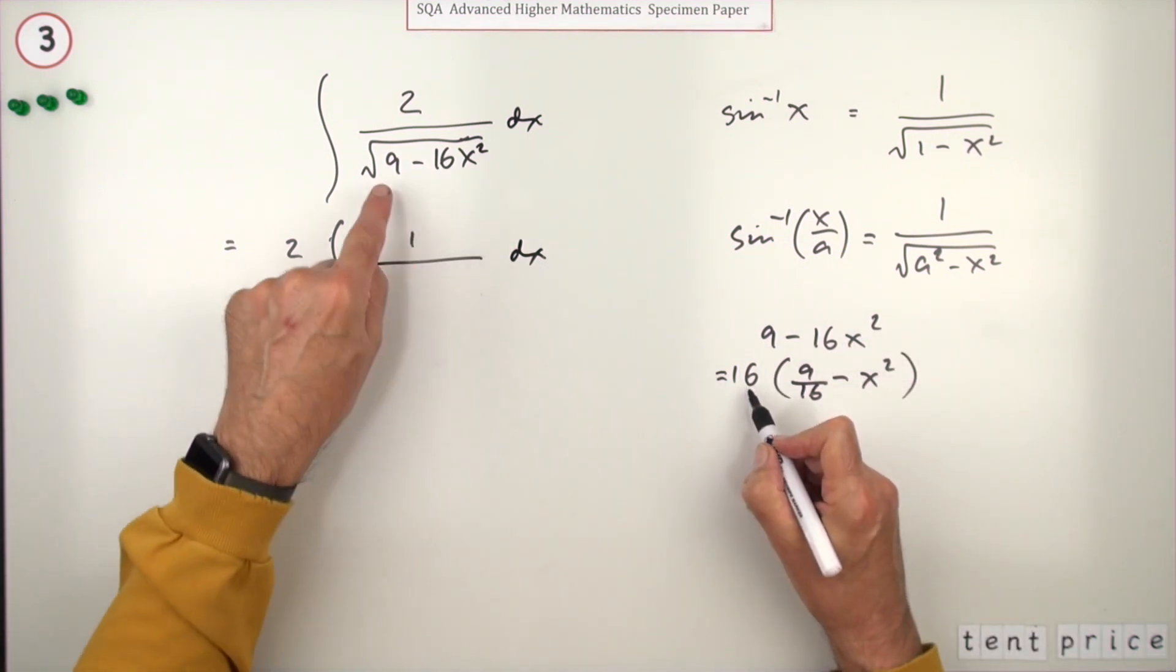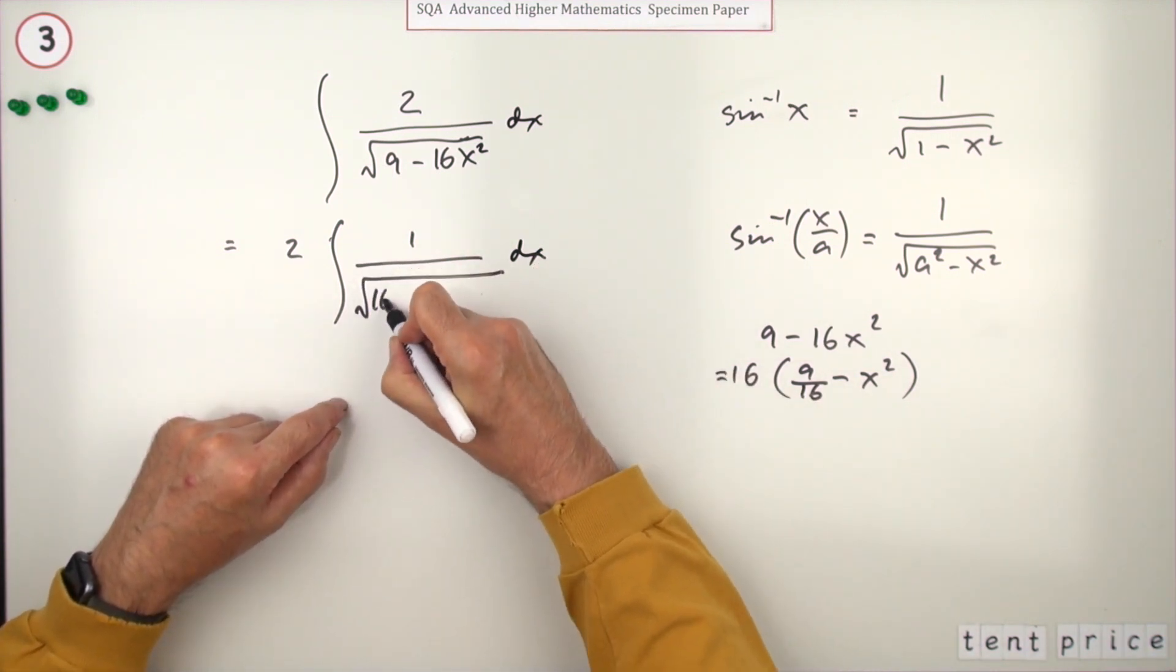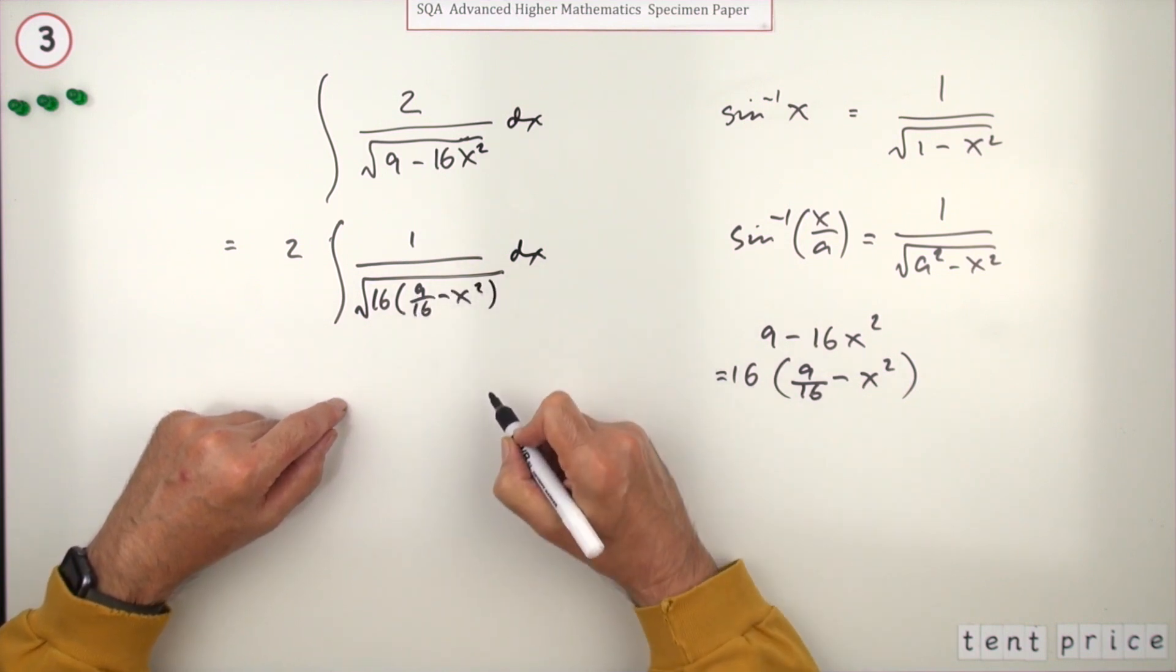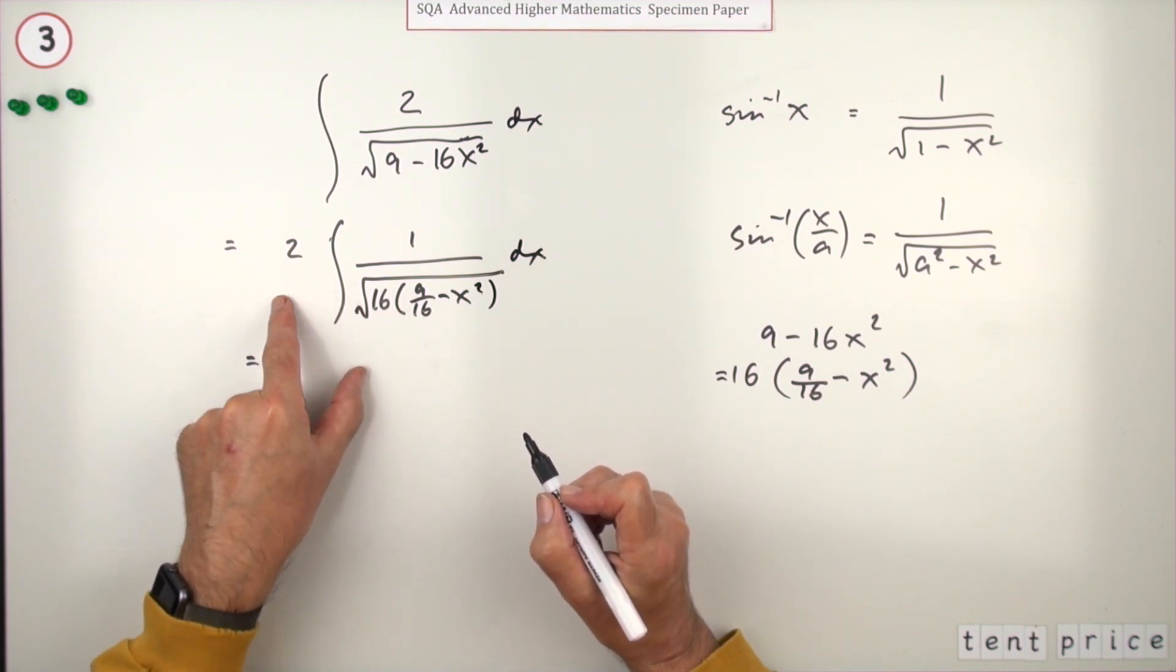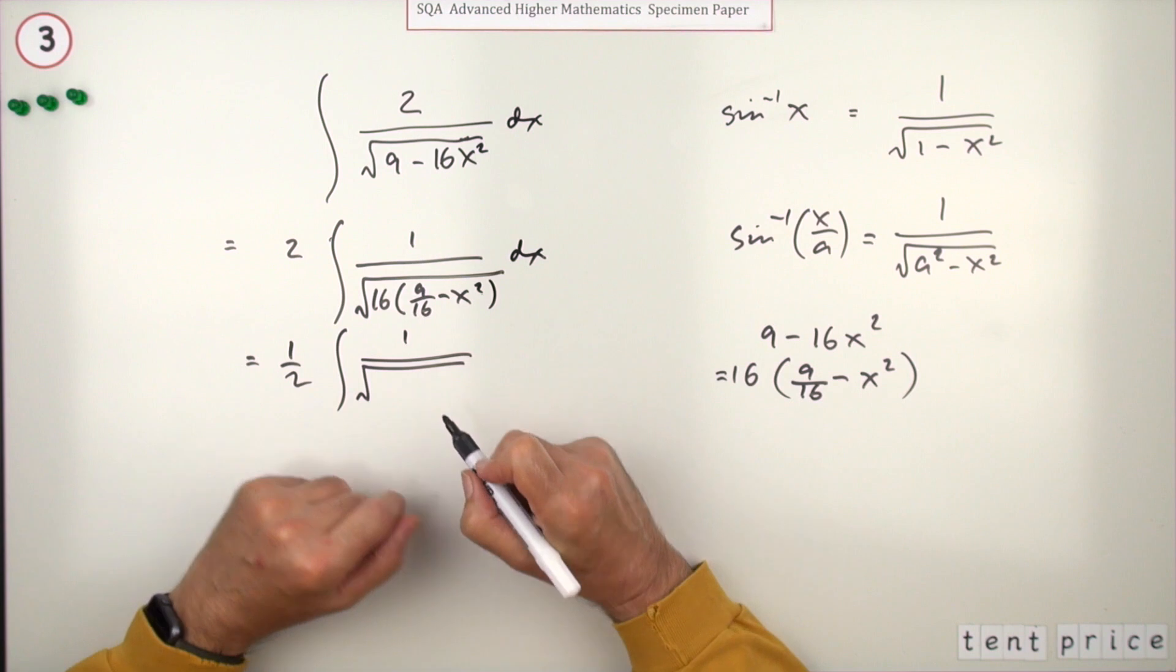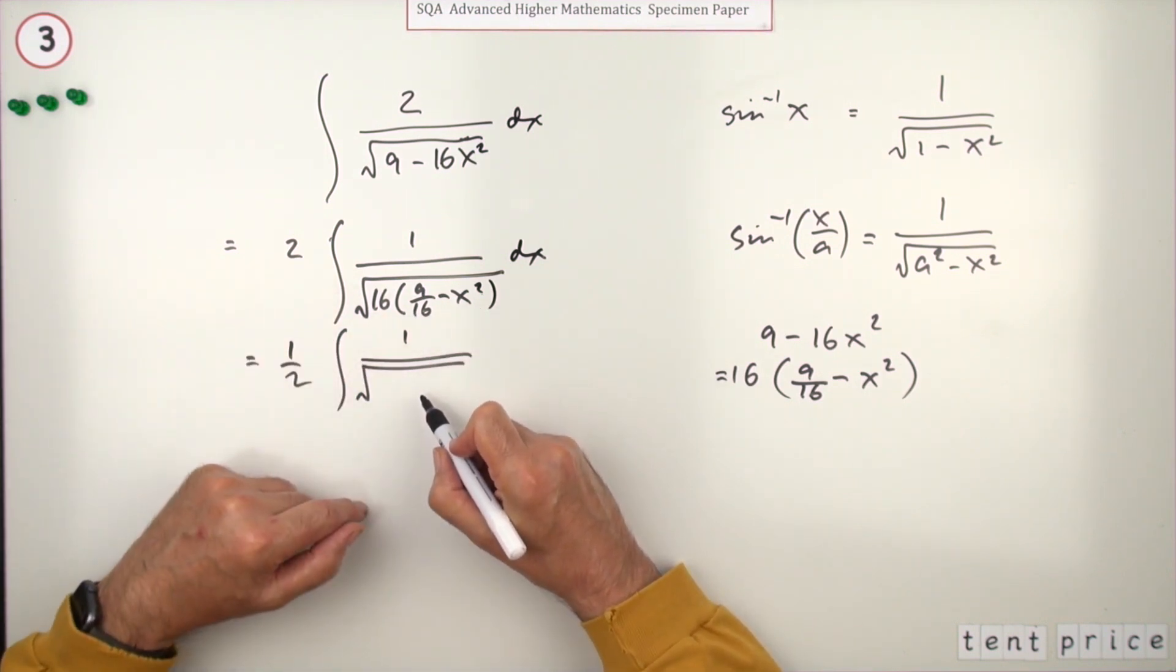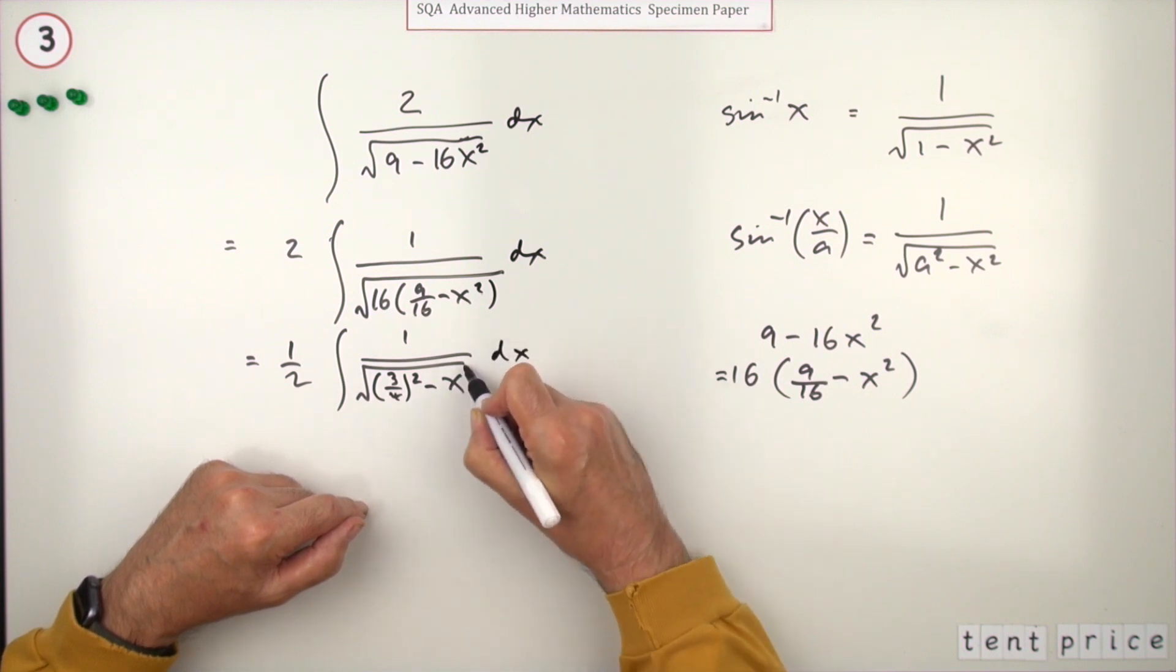So 16 times 9/16 minus x squared. Root 16 is 4, pull that out. Now it's 2 upon 4, which is just a half, and you've got 1 upon the square root of these parts. That's a perfect square - the square of 3/4: (3/4)² minus x² dx. That's the pattern you were trying to get.